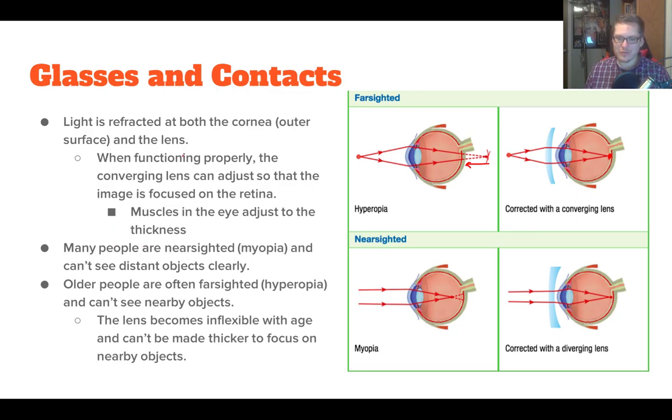Many people, farsighted isn't super common, but nearsighted is very common. So there's people with myopia. These are people that can't see objects that are very distant clearly. That's me. I can't see things that are far away. I'm pretty blind without my glasses.